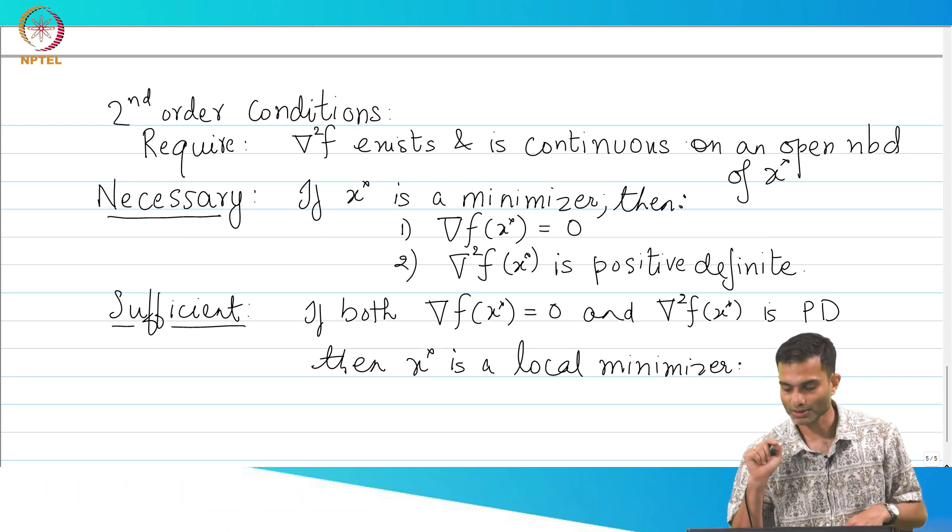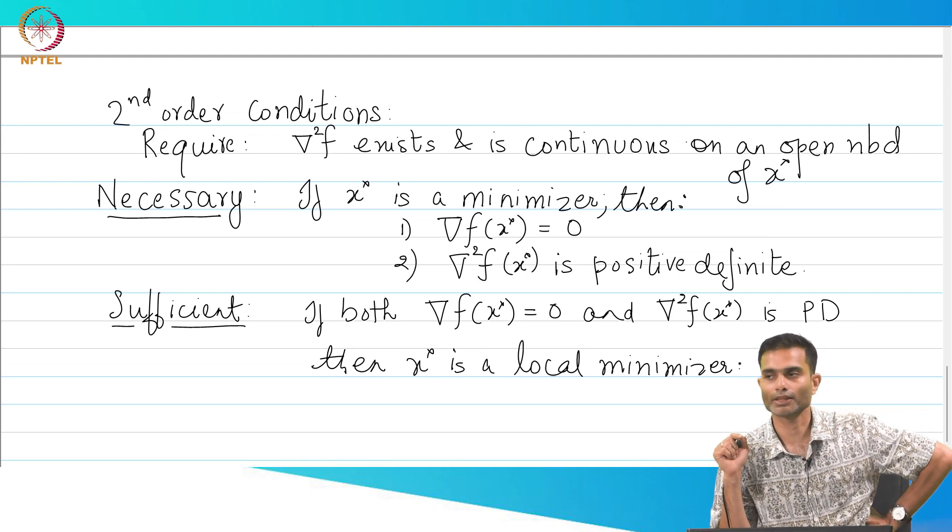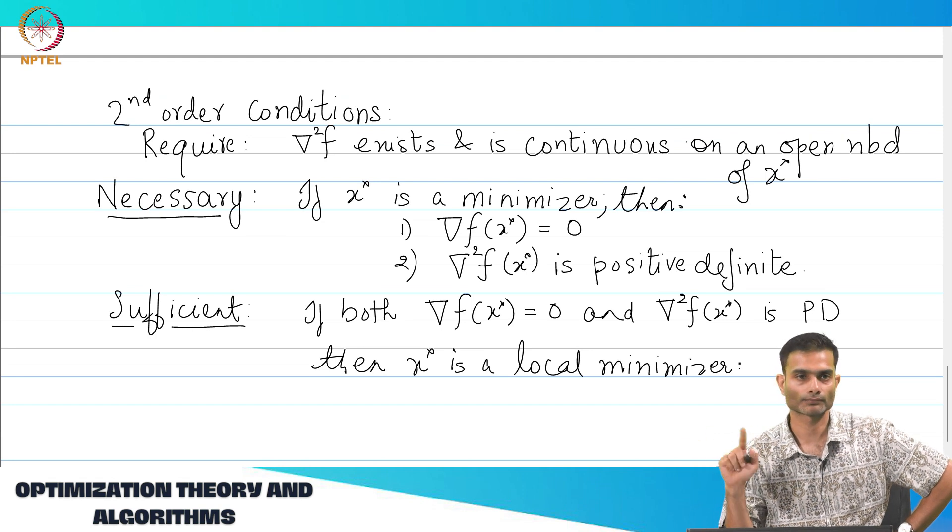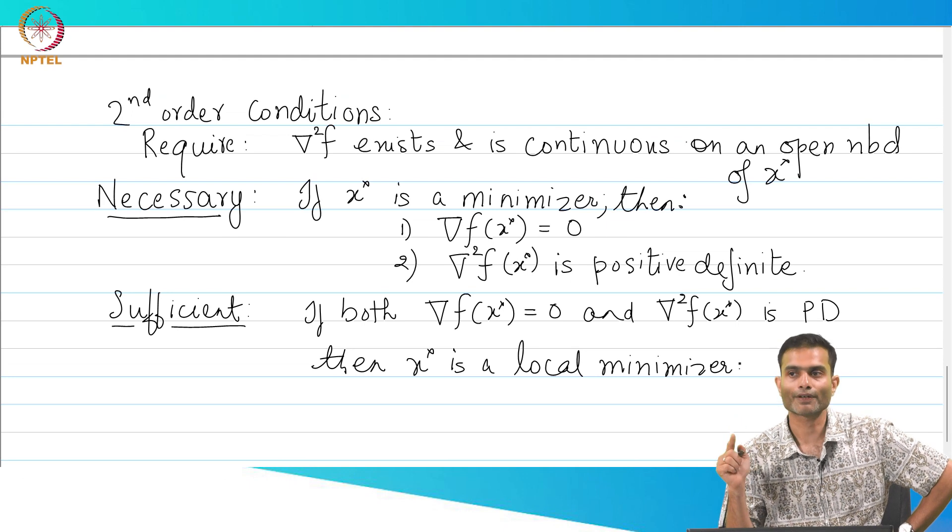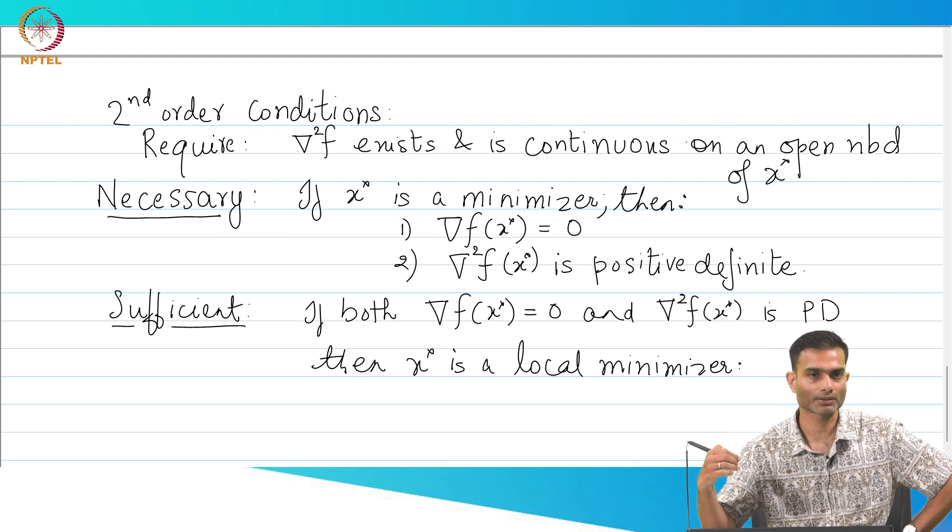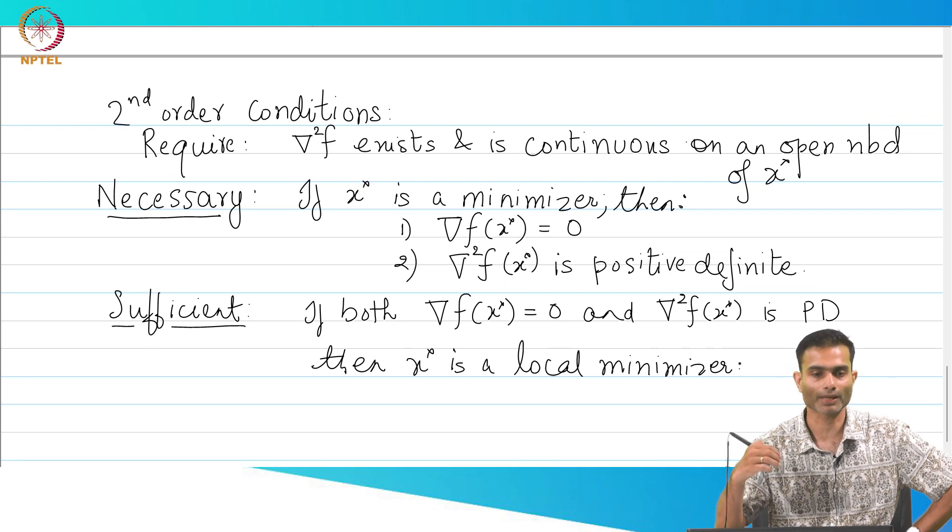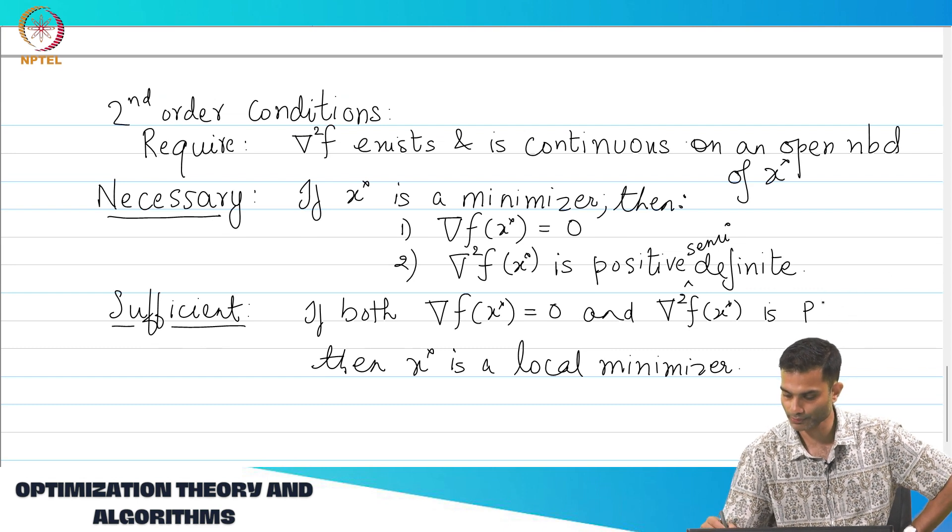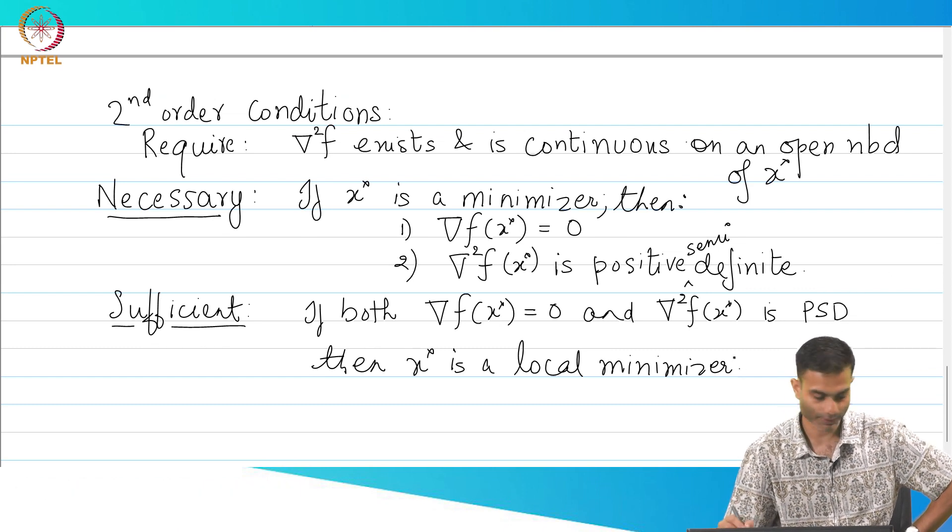This is flipping it the other way. There is one small correction that we need to make here. Can anyone point it out? The hint is weak strong. If I want to if I want my minimizers to include weak minimizers, then I will have to relax things a little bit and do what? Make this positive semi definite.